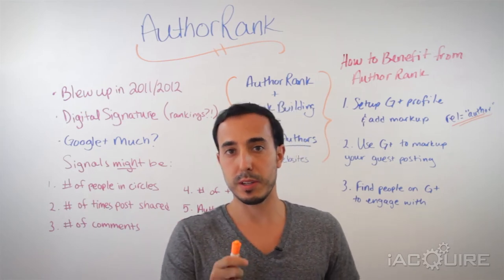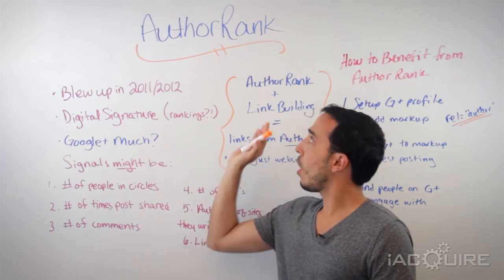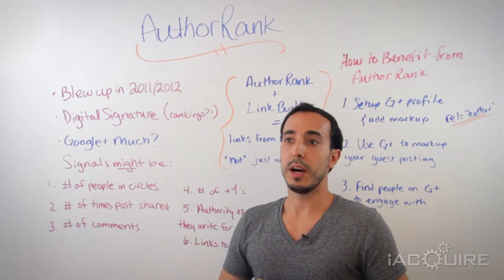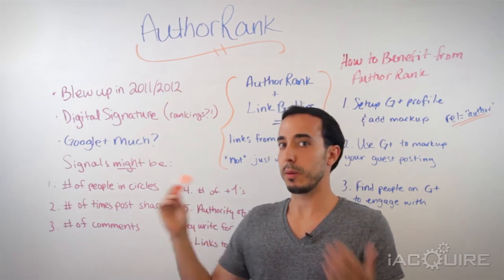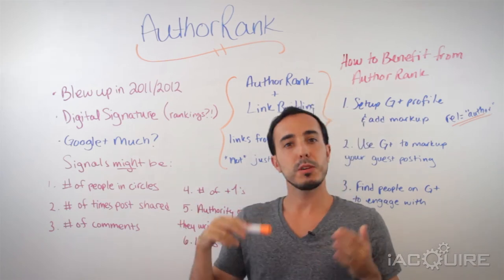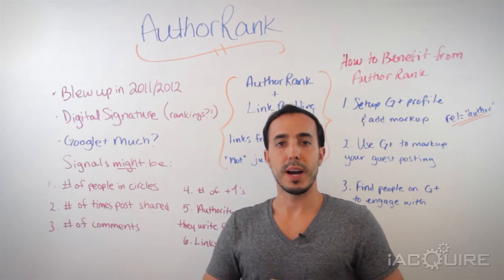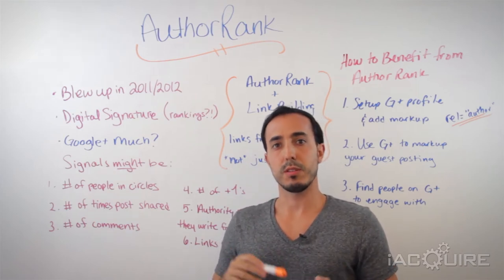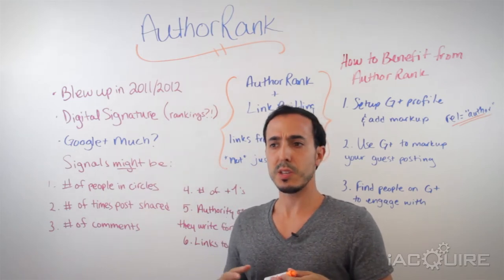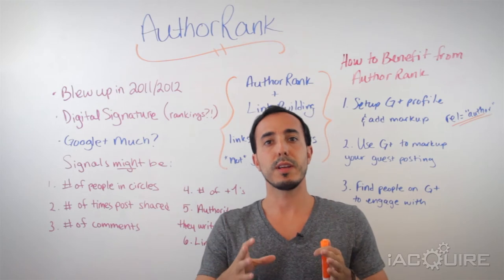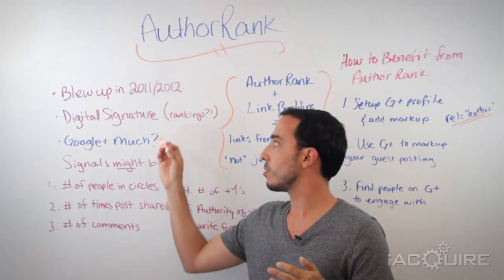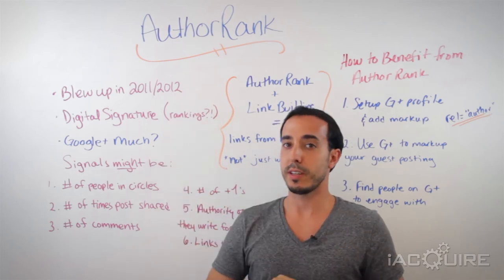It's not a really long one, but I think it's an important one. Author Rank — what is it? You may have heard it referred to as Agent Rank before. It kind of was in the background and then really blew up on the scene in 2011, 2012. If you take a look back at some of the patents that were written by Google in the earlier days, they talked about wanting to implement a sort of digital signature for authors on the web — something where they could identify that a piece of content belongs to that specific author.